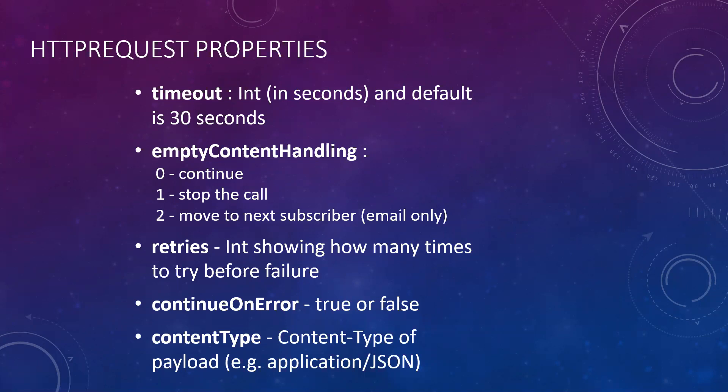The next property is empty content handling. You put an integer of 0, 1, or 2 — 0 will continue, 1 will stop the call, and 2 will stop that specific context with that subscriber and move on to the next one if used in an email environment. Then we have retries, which is an integer showing how many times to make the call before it fails.